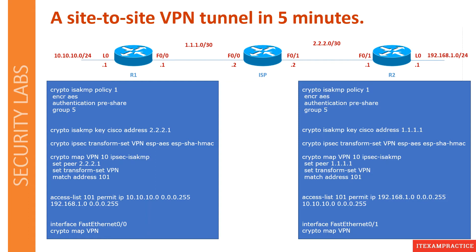The easiest way to create a site-to-site VPN tunnel is to use Notepad and a template. Here you can see literally 14 lines to configure a site-to-site VPN on a Cisco device. You can find a link in the description to download this template if you want to try it at home using Packet Tracer, GNS3, or real Cisco devices.